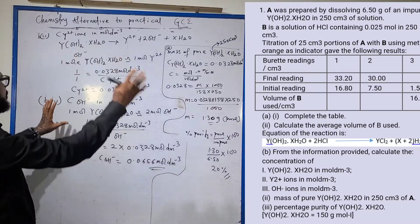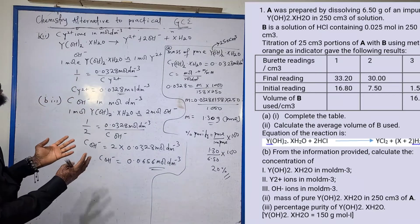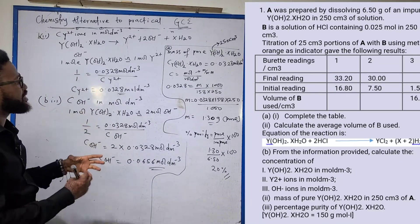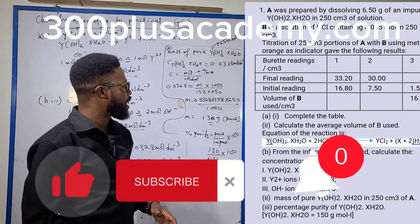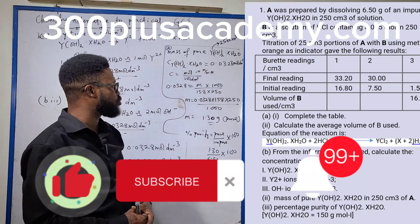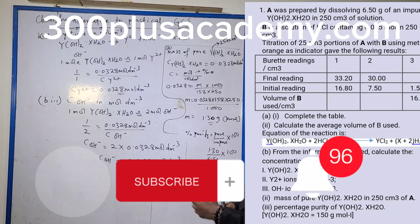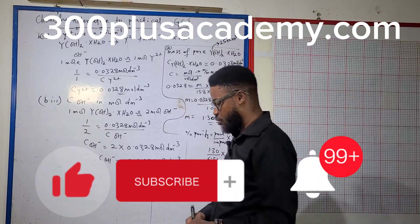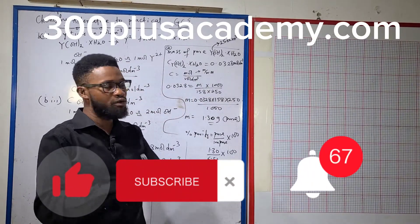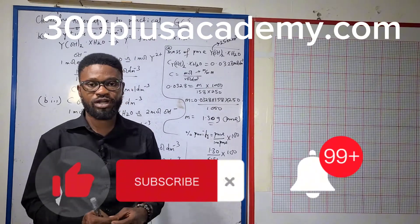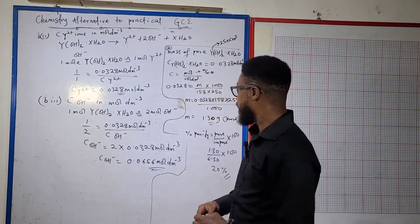This question has a lot of stoichiometry in it and requires your ability to go back to the beginning of the question and put things together, combining that with all of the formulas that you know. Do comment where you need clarity, turn on the notification bell, subscribe, share with your peers, and check us out at 300plusacademy.com to link up with us on WhatsApp and ask all your questions. Bye for now.